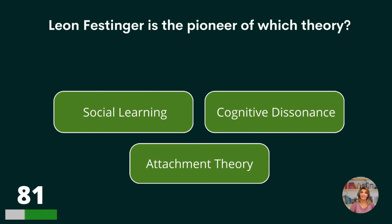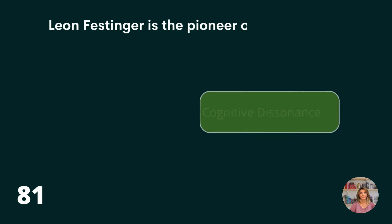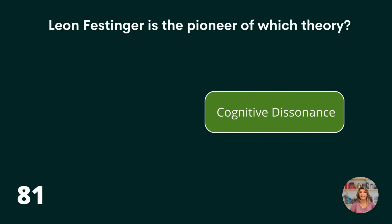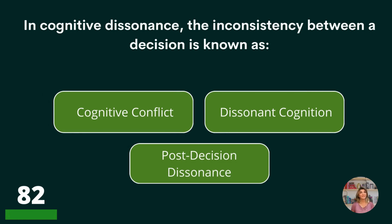And let's move over to psychological theories. Leon Festinger is the pioneer of which theory? Social learning, cognitive dissonance, or attachment theory? Cognitive dissonance.